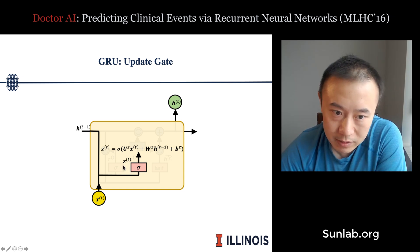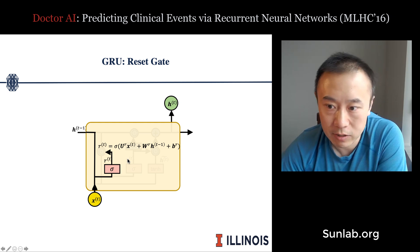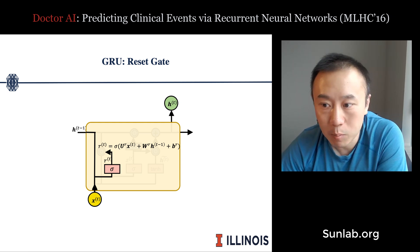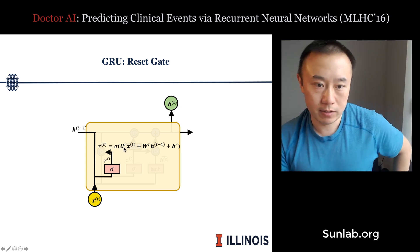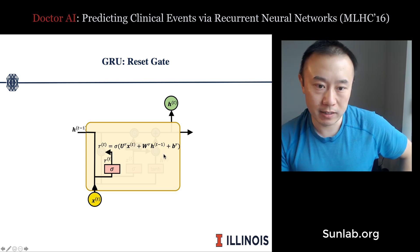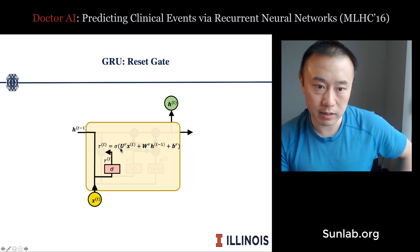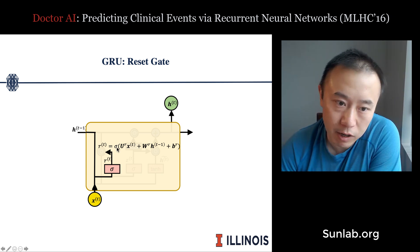They also have a reset gate r_t, used to determine how much past information to forget. It has an identical structure to the update gate: it takes x_t and h_{t-1} and applies a linear transformation with parameter matrices U_r and W_r plus bias b_r, then applies the sigmoid function to produce r_t.